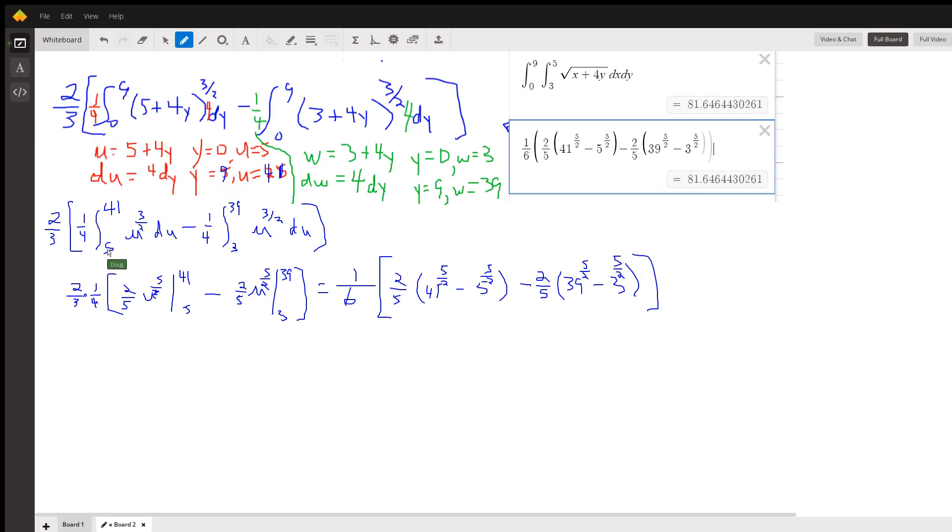There's the substitution. I've got the two-thirds here. I brought the one-fourth. I still have that one-fourth out. There's new limits from 5 to 41. u to the three-halves. Here's the antiderivative. Two-fifths u to the five-halves.